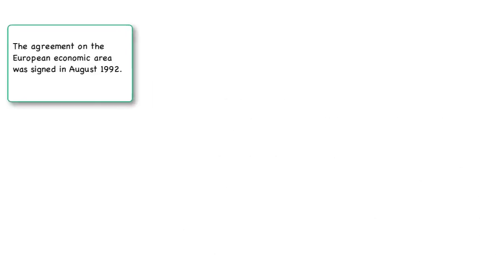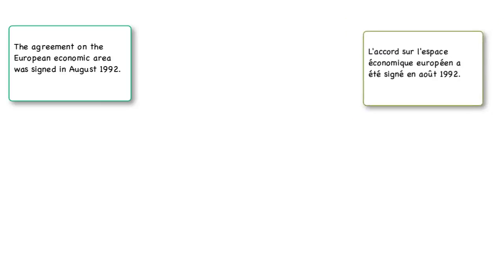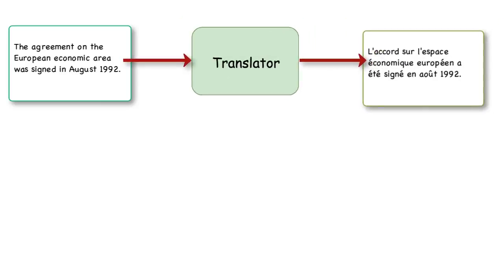Consider an English sentence. The agreement on European economic area was signed in August 1992. And this is the corresponding French translation. L'accord sur l'espace économique européen a été signé en août 1992.